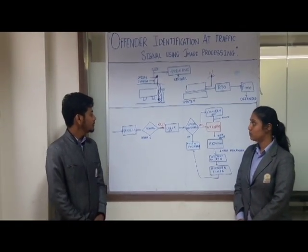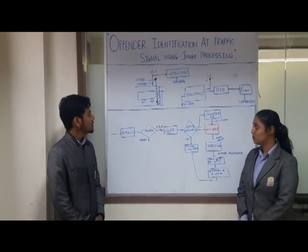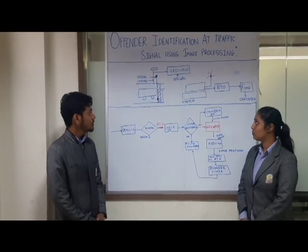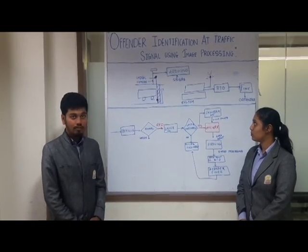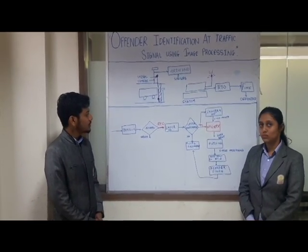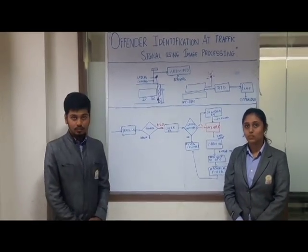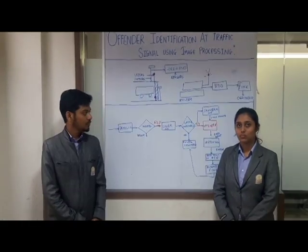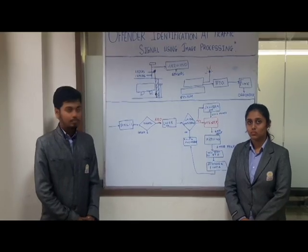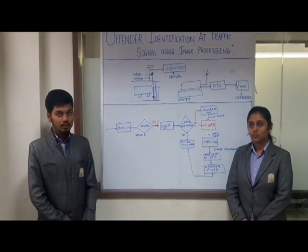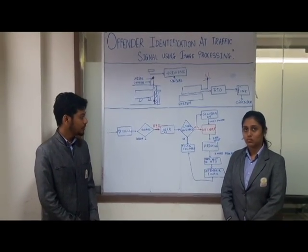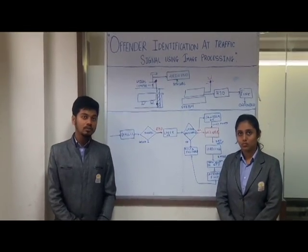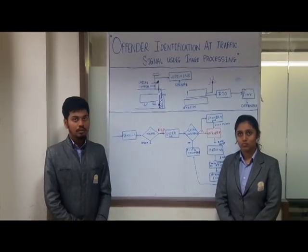Whenever a vehicle comes to a signal, if the signal is red, the lasers are on; if the signal is green, the lasers are off. If an offender disturbs the laser, the cameras get switched on and the number plate of the offender gets scanned. As the camera captures the vehicle number, the data is sent to the Arduino and various sensors connected to it store the data.